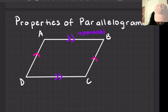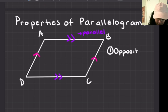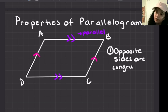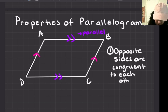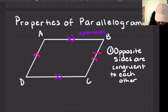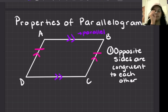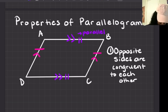Let's put some letters on this parallelogram. Property one is that the opposite sides are not only parallel to each other, but they are also congruent to each other. So side BC is congruent to AD. The congruent marking is a straight line, while the parallel marking is little arrows.